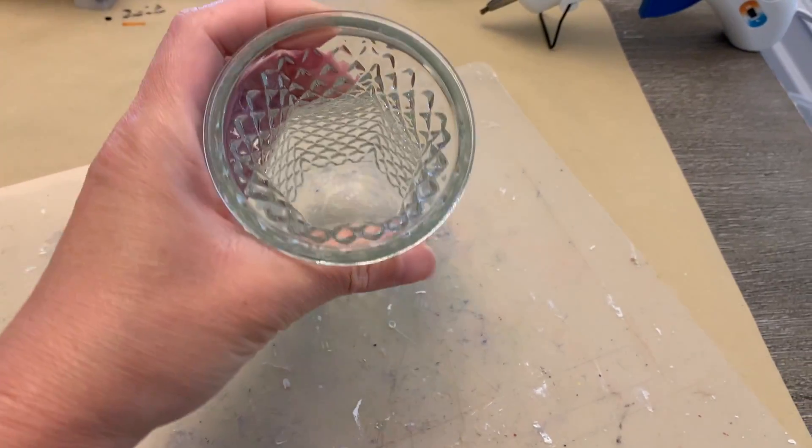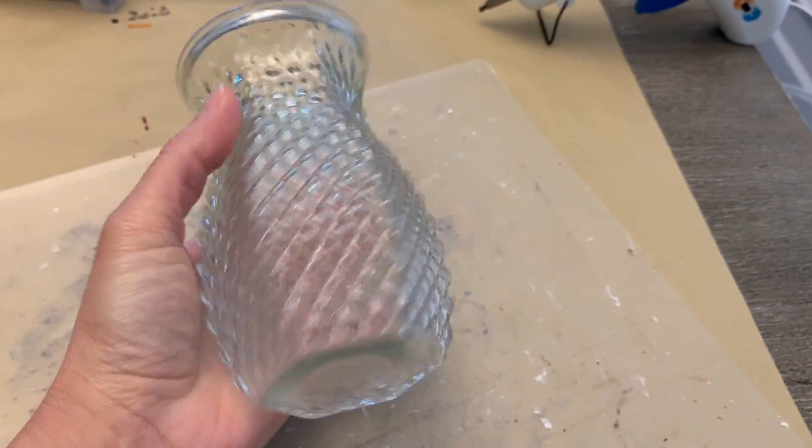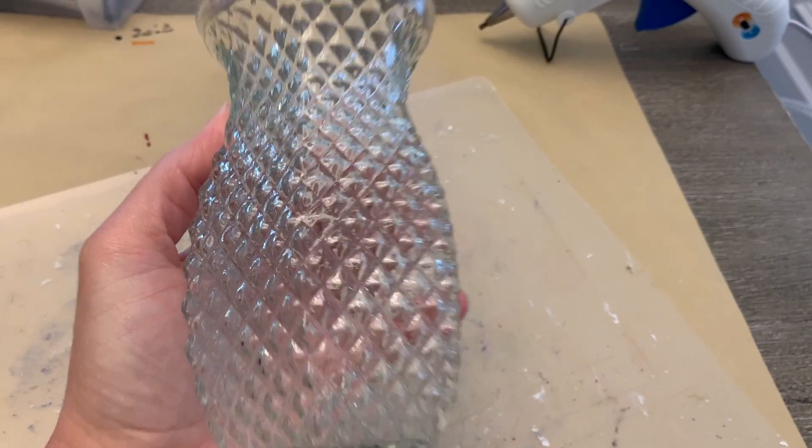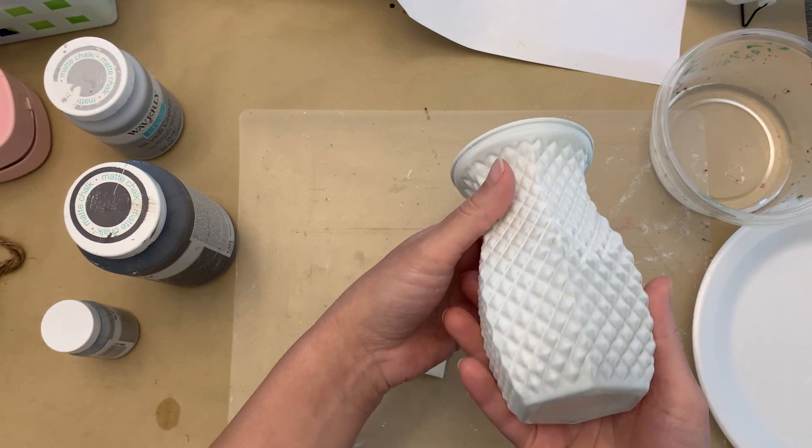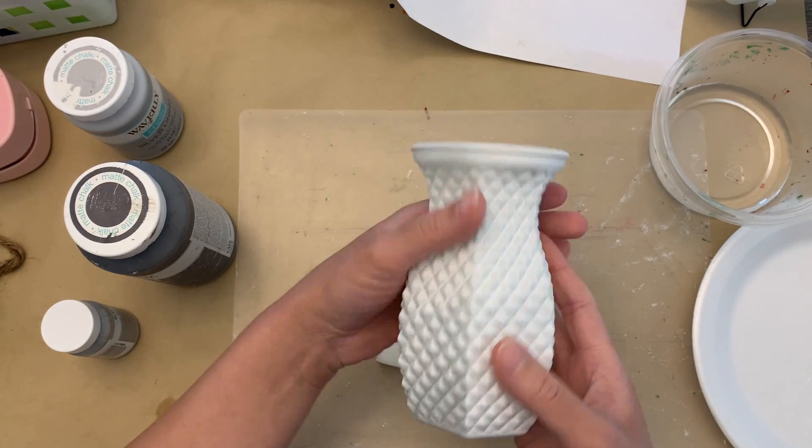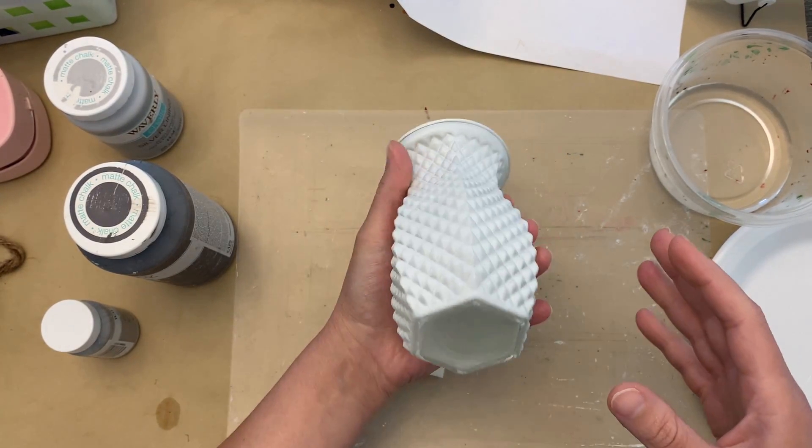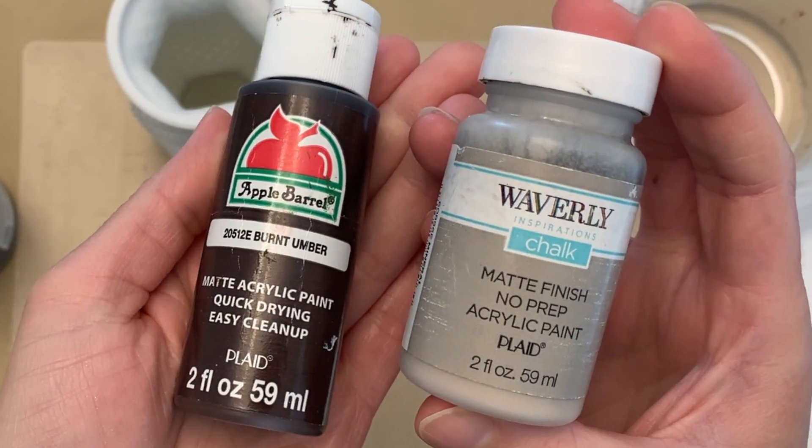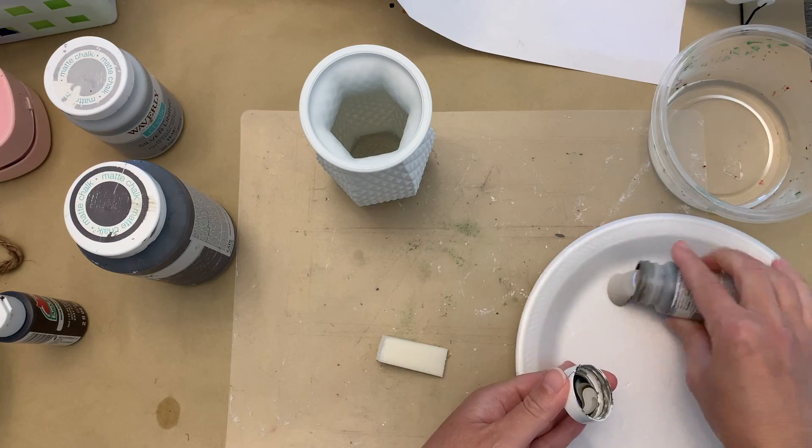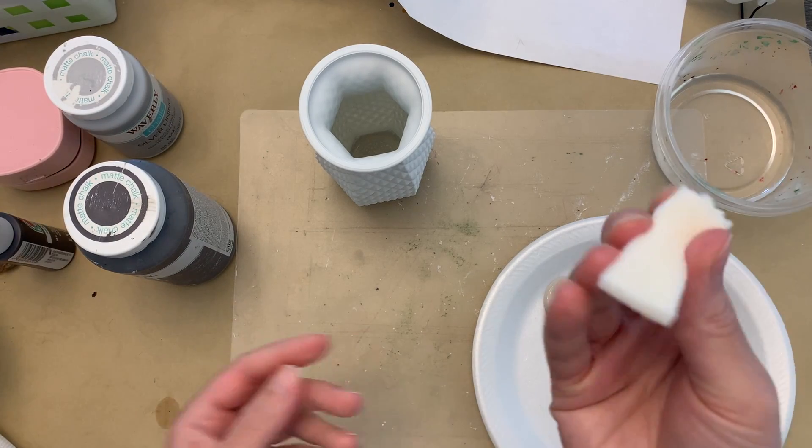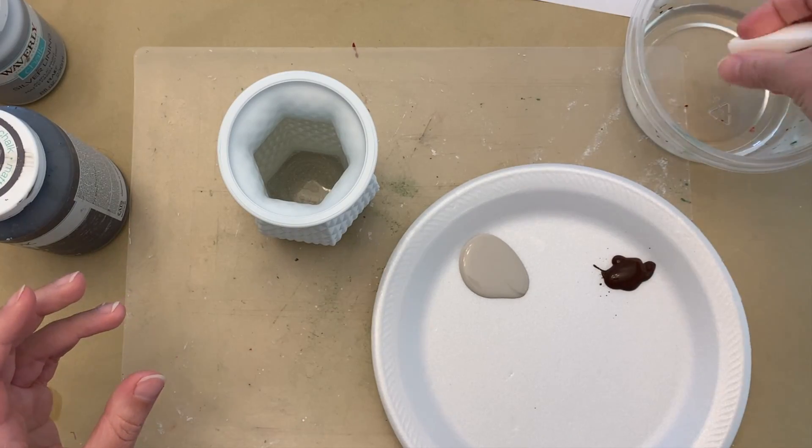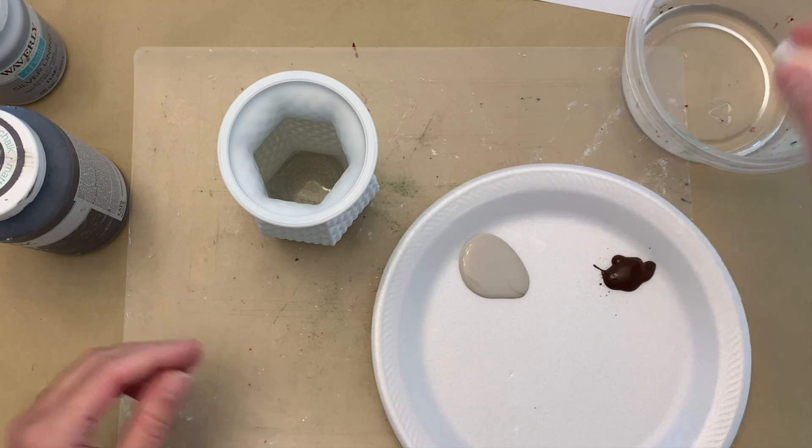First up I have this glass vase that I picked up at a thrift store. I'm pretty confident I paid 50 cents for it and I took it out to my garage and gave it a base coat of spray paint in the color white. You can tell it's not an even coat but that's okay because we're going to add a whole lot more to it. I'm using Mineral by Waverly Chalk Paint and Burnt Umber which is an acrylic paint by Apple Barrel and a sponge.